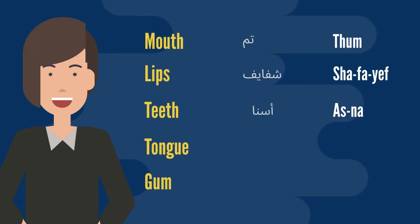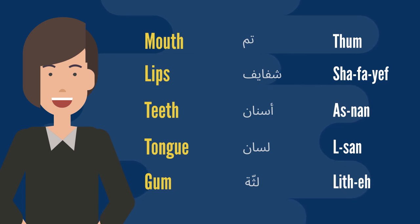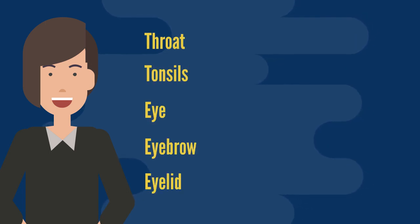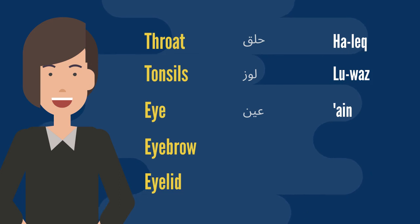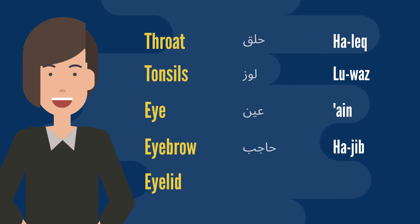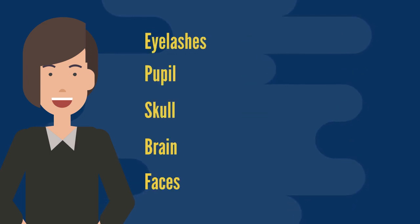Teeth — snān. Tongue — lsān. Gum — līth. Throat — halik. Tonsils — lūz. Eye — aīn. Eyebrow — hājib. Eyelid — jifn. Eyelashes — rūmūš.